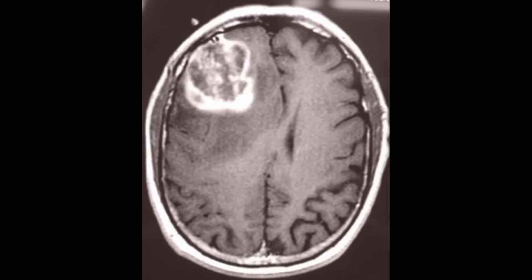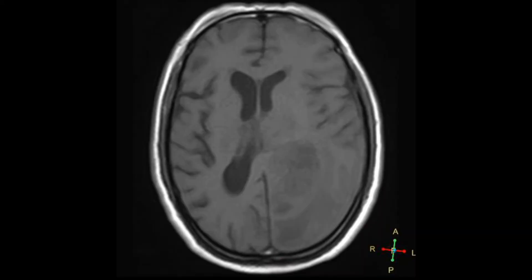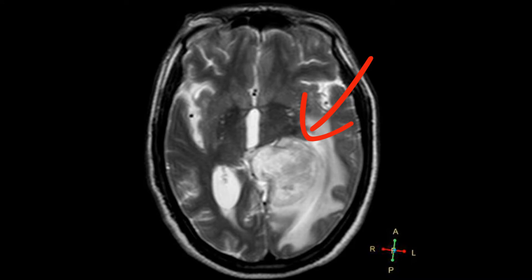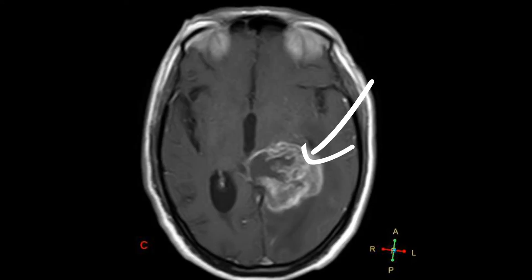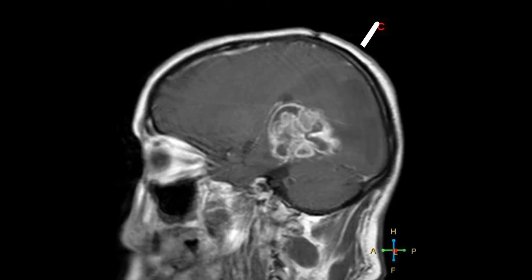Now this is a pilocytic astrocytoma — you can see it in the right frontal lobe on CT. On MRI T1 weighted, here is an astrocytoma in the left lobe next to the lateral ventricles. Here is the T2 weighted image, and finally T1 plus contrast. Here is a sagittal T1 plus contrast MRI just above the cerebellum.